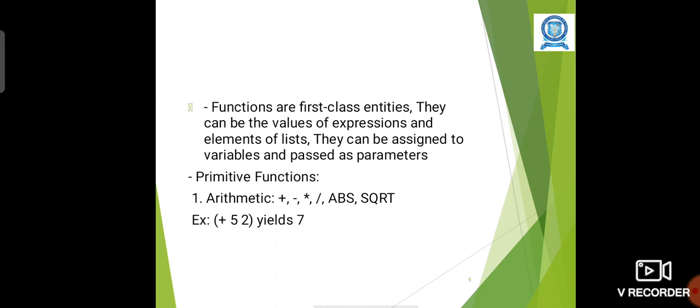Primitive functions are arithmetic: plus, minus, star, division symbol, abs, square root. Example: plus 5 2 yields 7. That is, the operator will be preceded by the operands. So here the evaluation is plus 5 2 means 5 plus 2, so we will get 7.